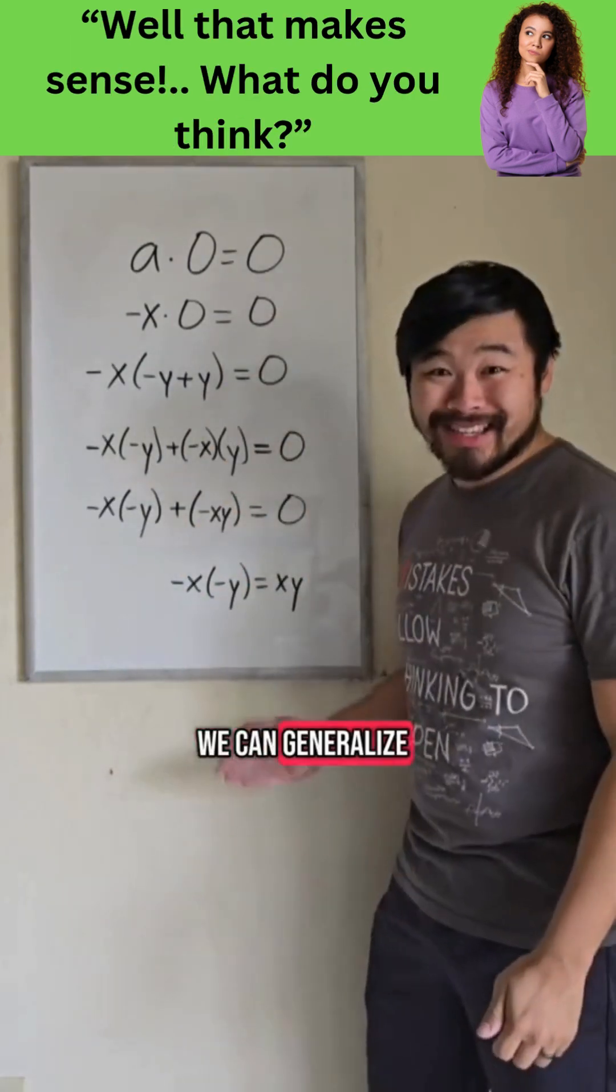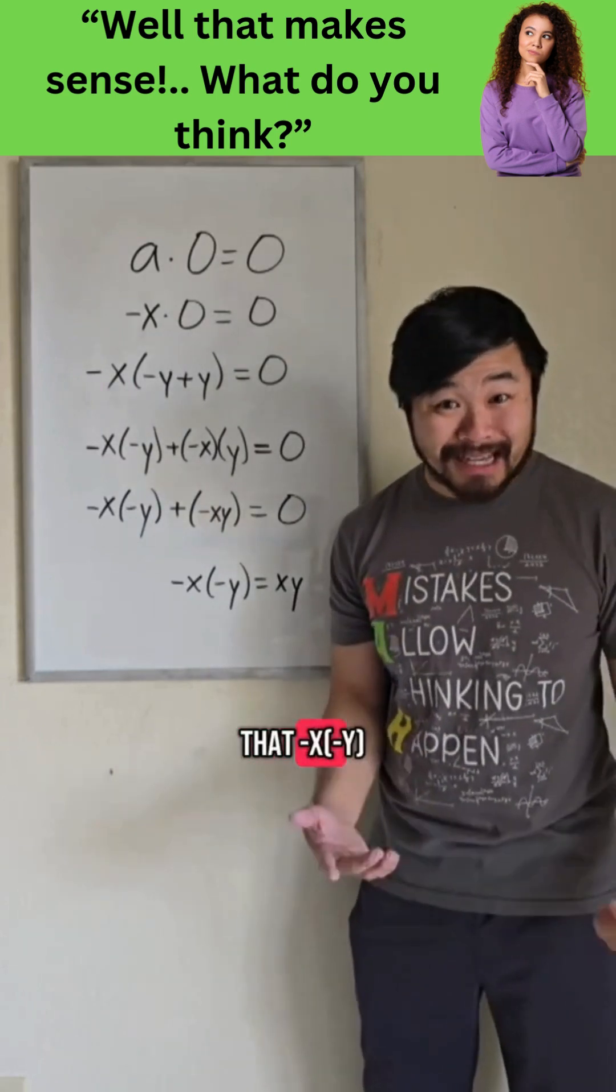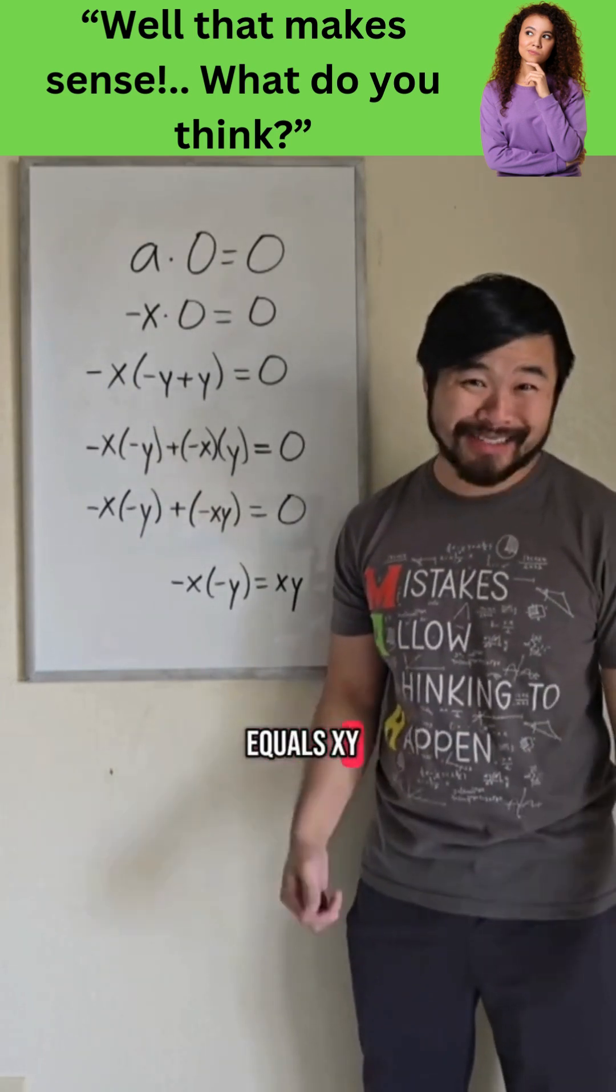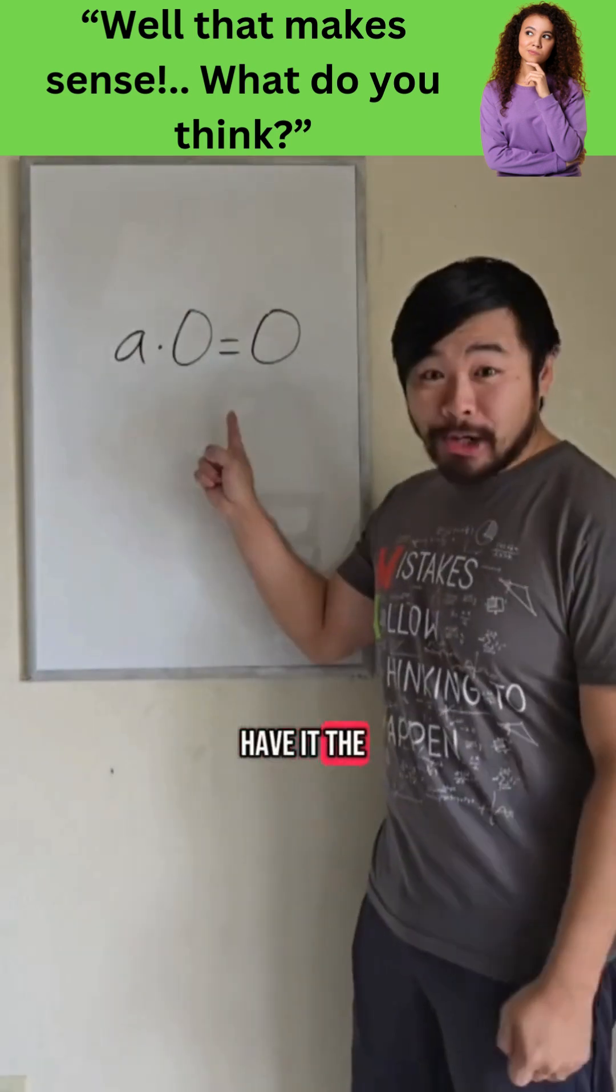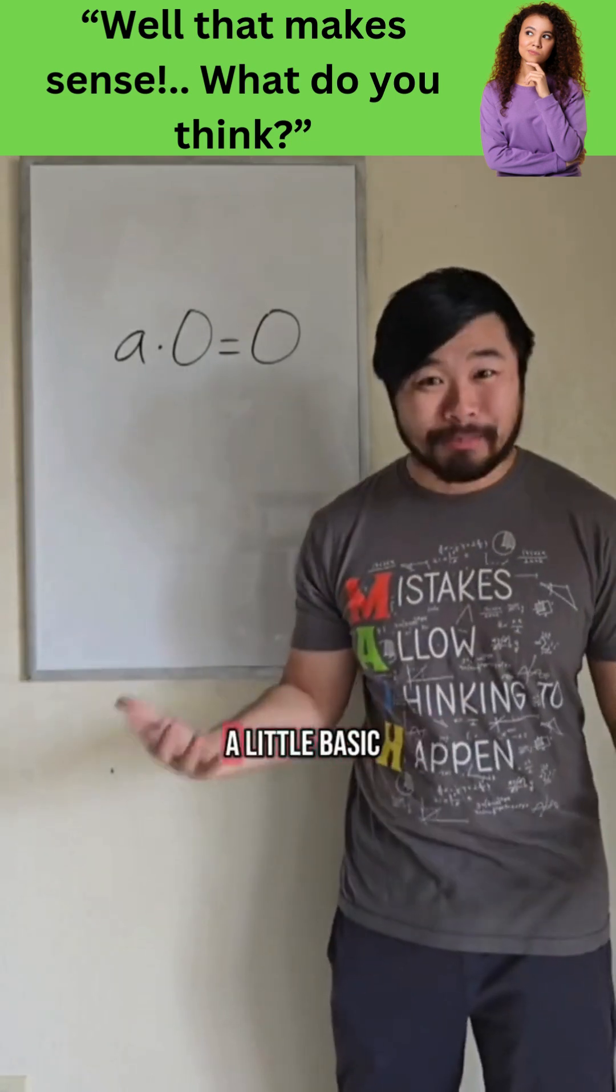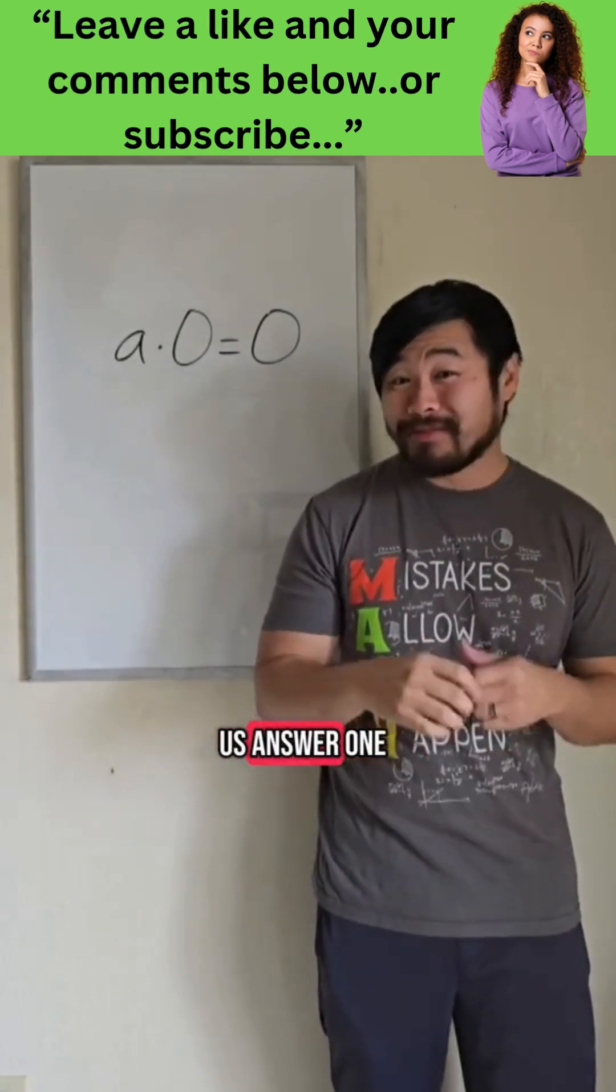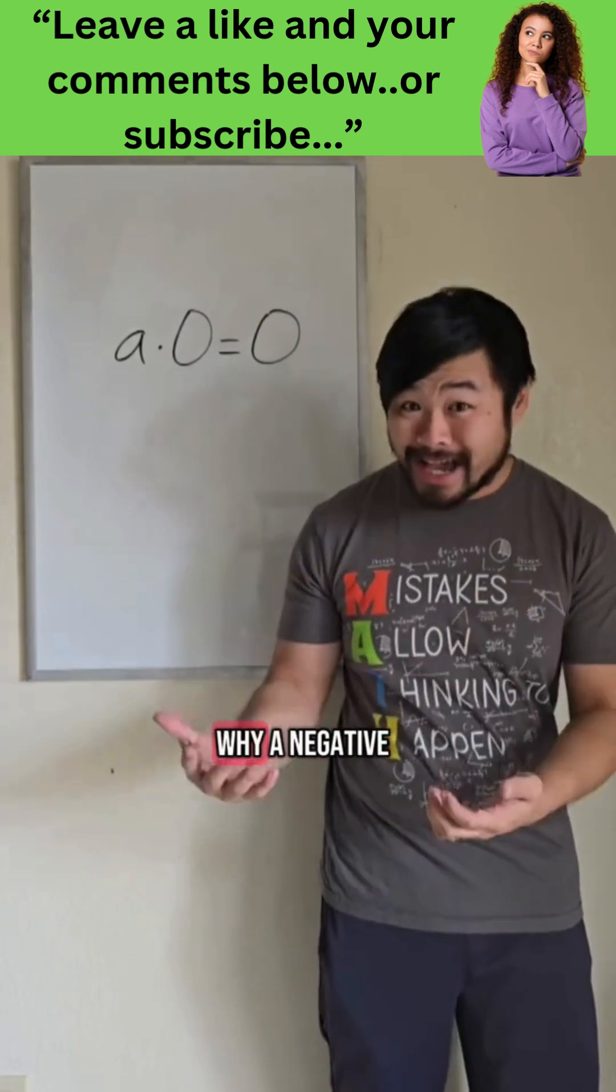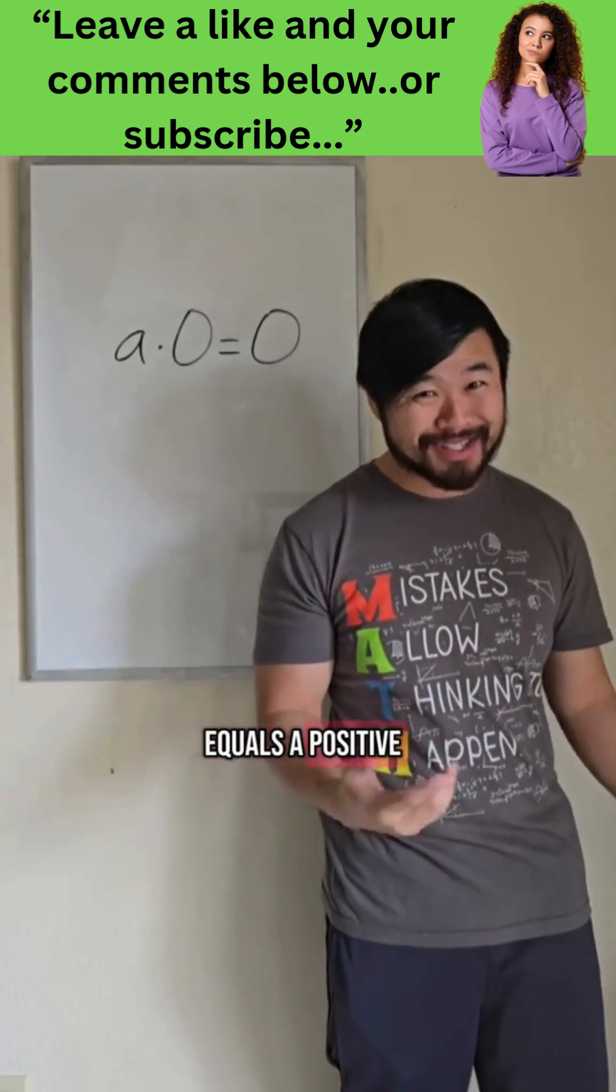And by the way, we can generalize this to see that negative x times negative y equals x times y. So there you have it. The zero property of multiplication may seem a little basic, but it helps us answer one of the most common questions in math class of why a negative times a negative equals a positive.